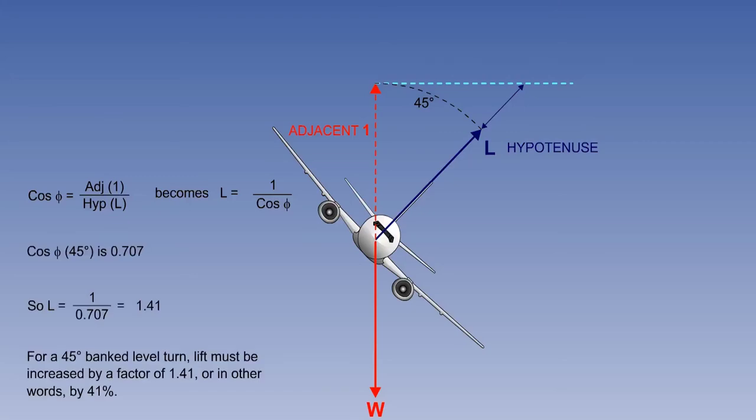Cos phi, in this case, at 45 degrees, is 0.707. 1 divided by 0.707 is 1.41. So, for a level 45 degree bank turn, the lift must be 1.41 times that of straight flight. Or, to put it another way, increased by 41%.